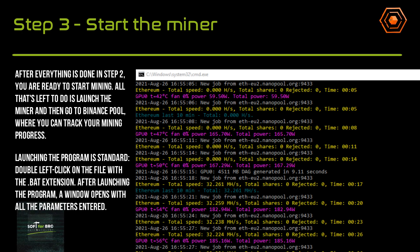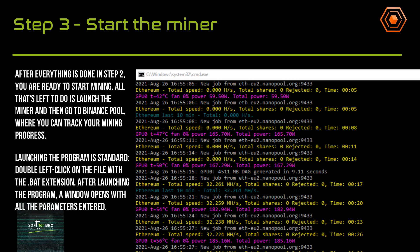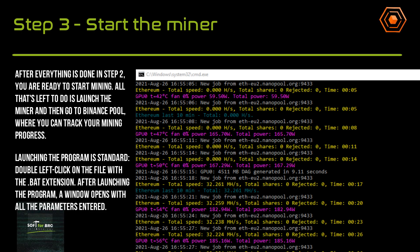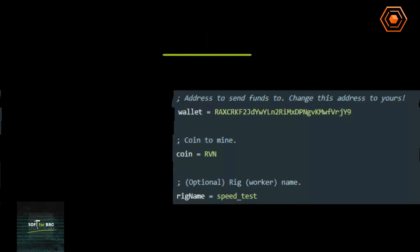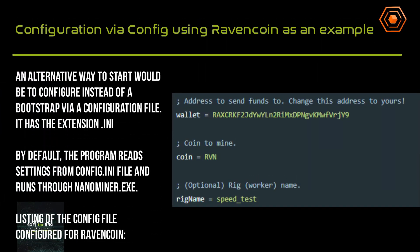Launching the program is standard: double left-click on the file with the .bat extension. After launching, a window opens with all the parameters you entered.